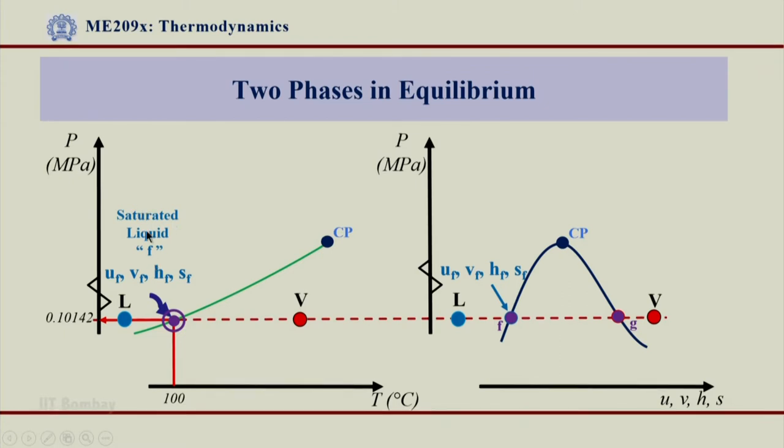Saturated liquid giving subscript f, and corresponding properties at this point are Uf, which is thermal energy, Vf which is specific volume, Hf is enthalpy, and Sf is entropy of the liquid which is on saturated liquid line.